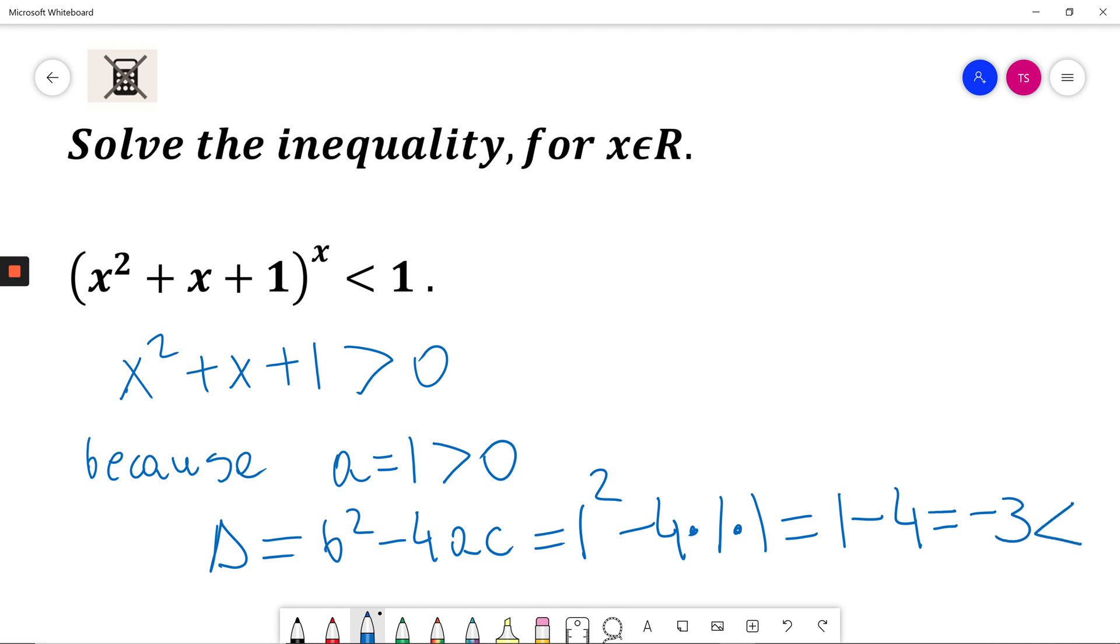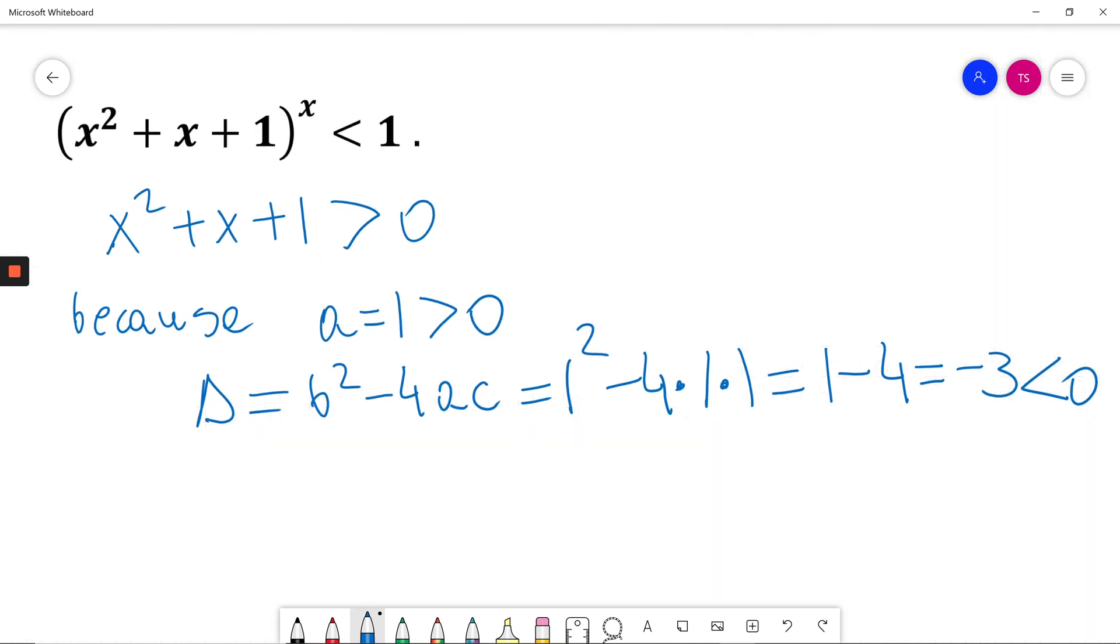negative 3, which is less than 0. So a is positive and the discriminant is negative.